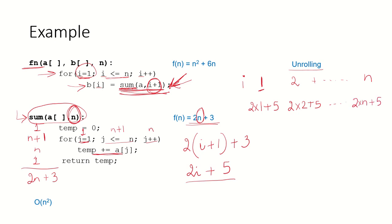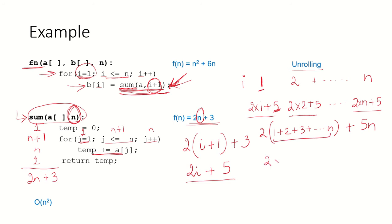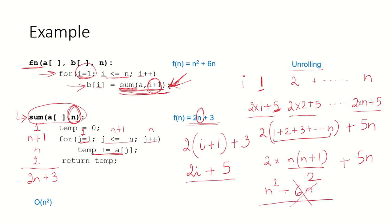We know that for each value of i this function is going to be called, so let us use the technique of unrolling. When i is 1, sum takes 2(1) plus 5; when i is 2, it takes 2(2) plus 5; and this continues until i equals n, taking 2n plus 5 time. The total time is the sum of all these terms: 2 into (1 plus 2 plus 3 ... plus n) plus 5n. This gives 2 times n(n+1)/2 plus 5n, which equals n squared plus 6n. Ignoring the low order term, the complexity of this algorithm is order of n squared.